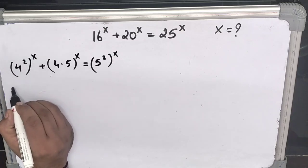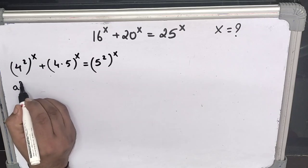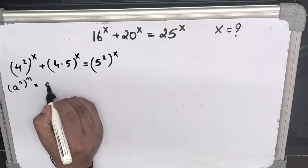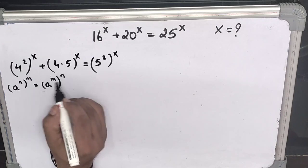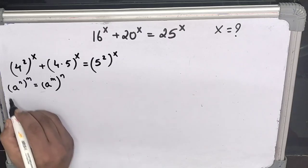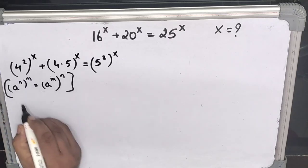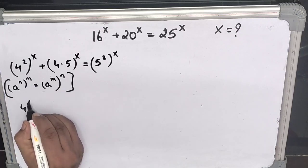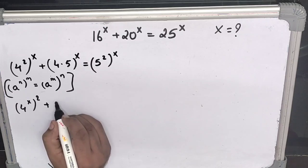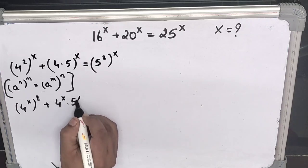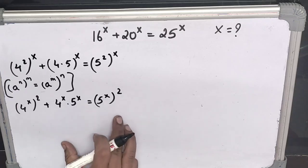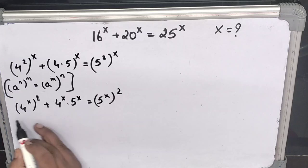We will use the exponential rule: a to the power m, whole to the power n, equals a to the power m times n. Applying this, we get 4 to the power x, whole squared, plus 4x into 5x, equals 5 to the power x, whole squared.